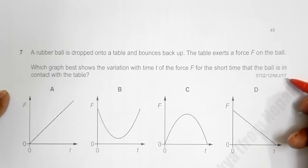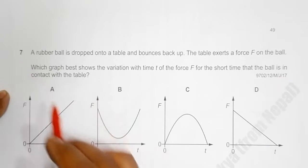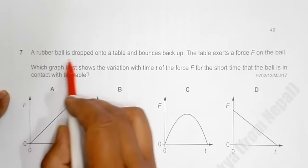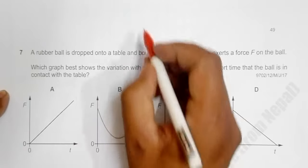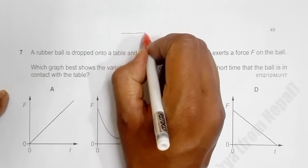The question is 2017 May June paper 1 2, question number 7. It says a rubber ball is dropped onto a table and bounces back up. So if we have the table surface here, what it says is the rubber ball comes here and bounces back up.